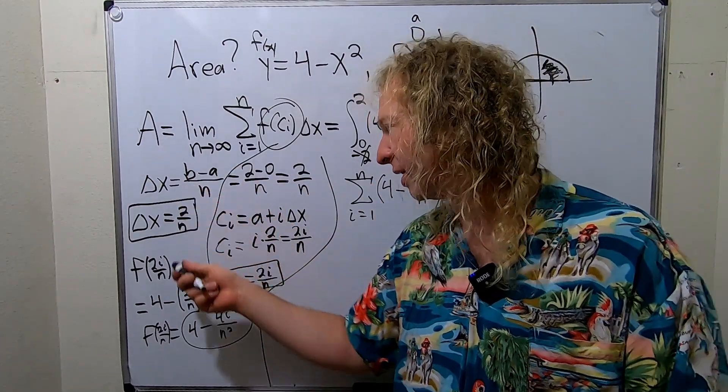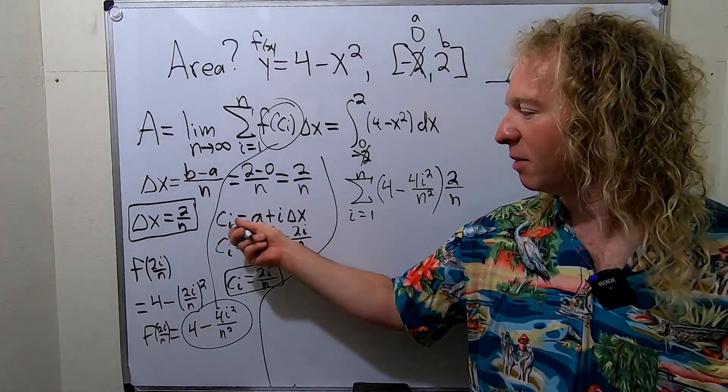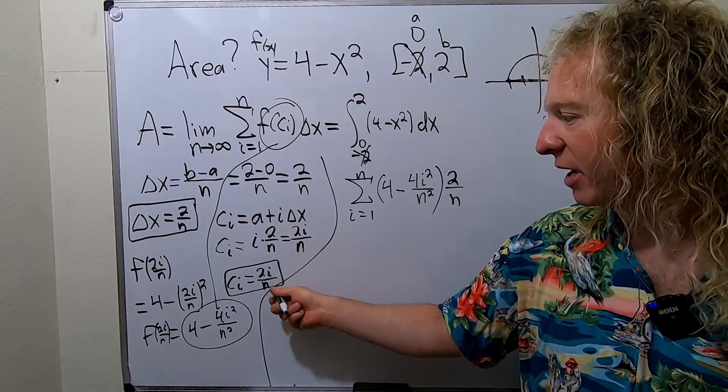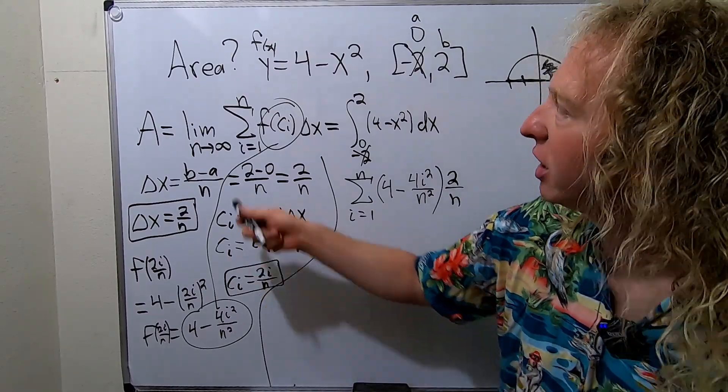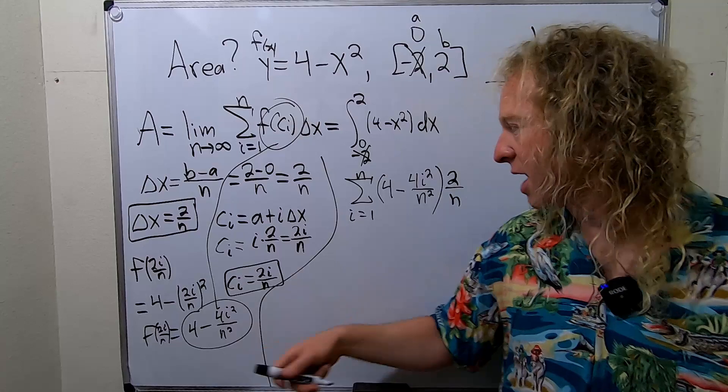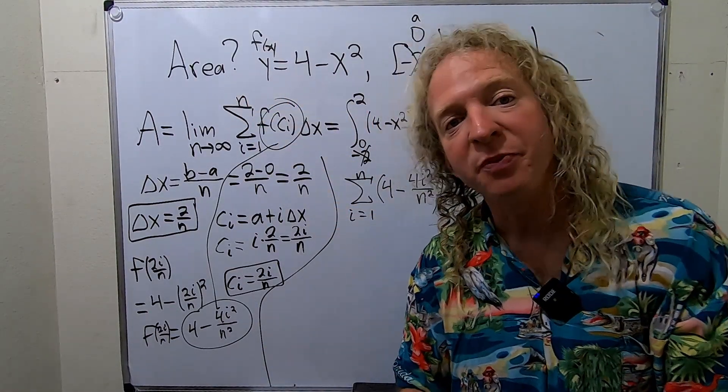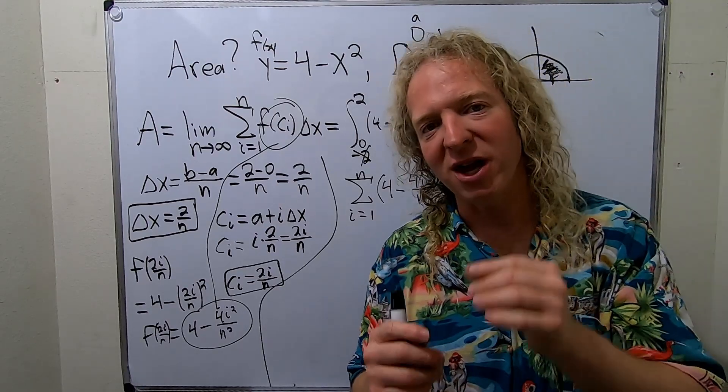Then you find c sub i. It's a plus i delta x. A is 0, so it goes away. So we have our c sub i. Then you take your c sub i and you plug it into your function. So we did that here. And now we're going to write this summation sign. Notice I didn't write the limit yet.